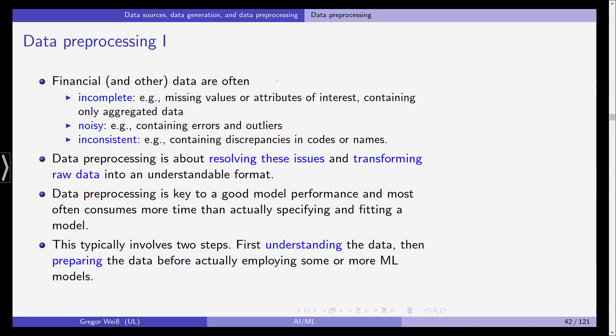Data preprocessing typically involves two steps. First, you need to understand the data. You need to make sure that you have a good feeling of what the data looks like, and this includes looking at the raw data, taking the extra mile, looking at the Excel file, the CSV file, or other formats the raw data might come in. Then you have to prepare the data so that your machine learning and artificial intelligence algorithms can properly work on the raw data.